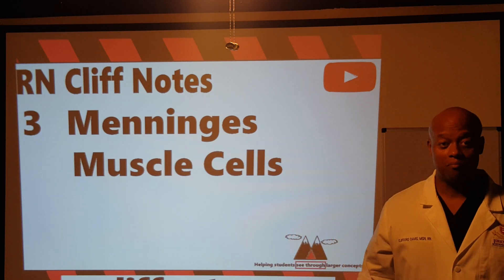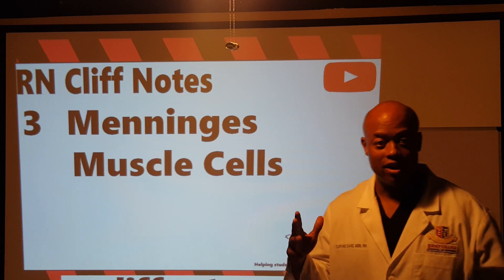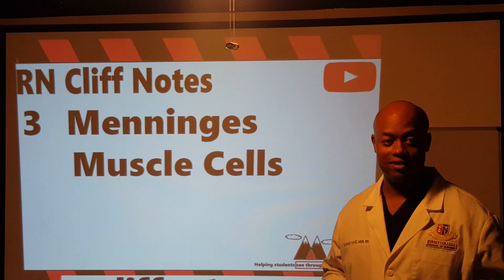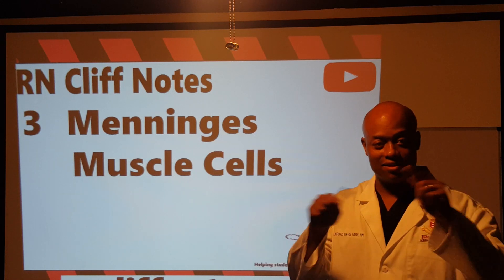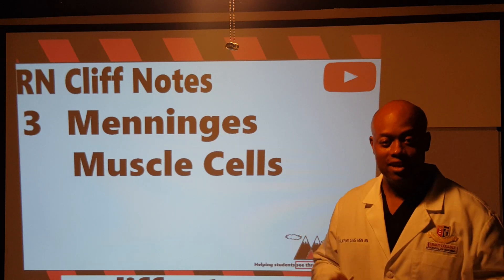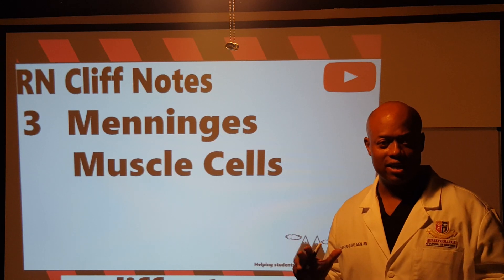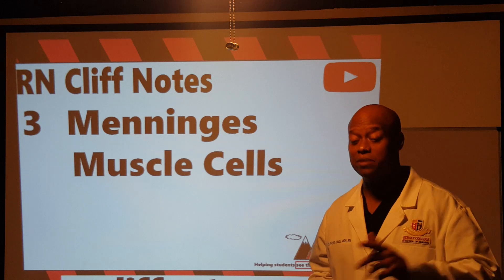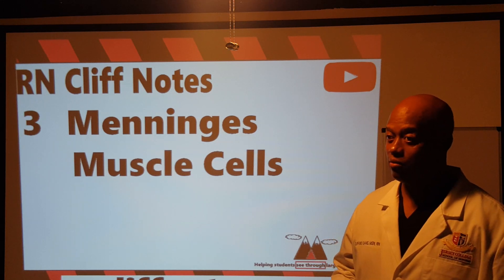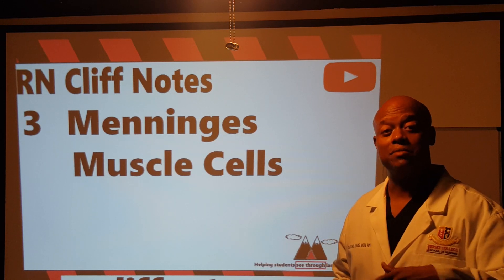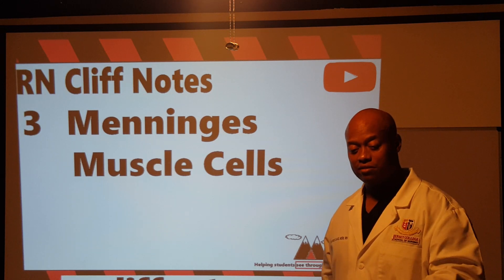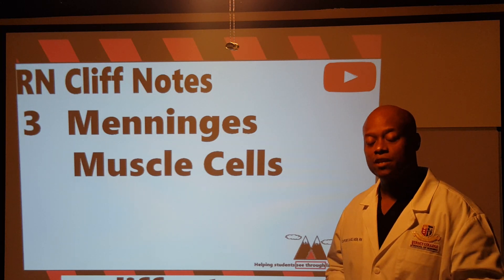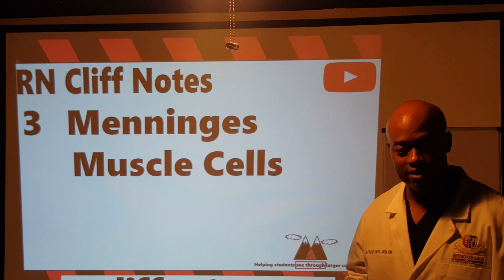Dura mater — 'dura' means hard, 'mater' means mother, so that outer coating is the hard mother. Then arachnoid — it looks like a bunch of little spider webs, like arachnophobia, and that provides cushion for your brain. And then pia mater — 'pia' means soft, so the very interior lining your brain is the softer coating, providing more cushion in the event of shock.